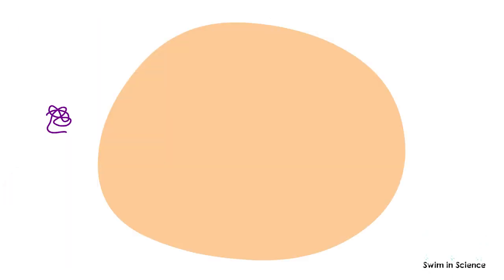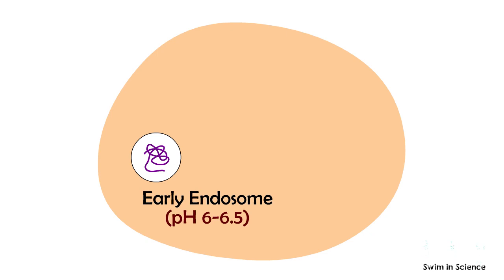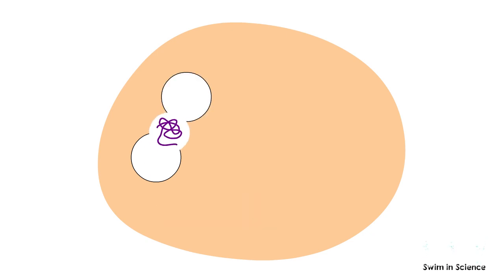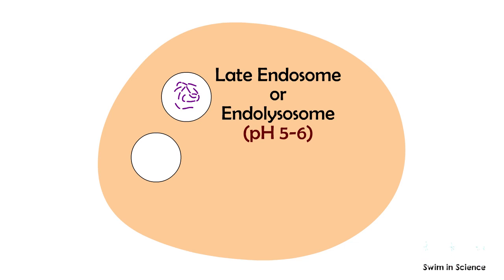As mentioned, once an antigen is internalized, it moves through three increasingly acidic compartments. The first compartment is early endosome with pH 6 to 6.5. The second compartment is late endosome or endolysisome with pH 5 to 6.